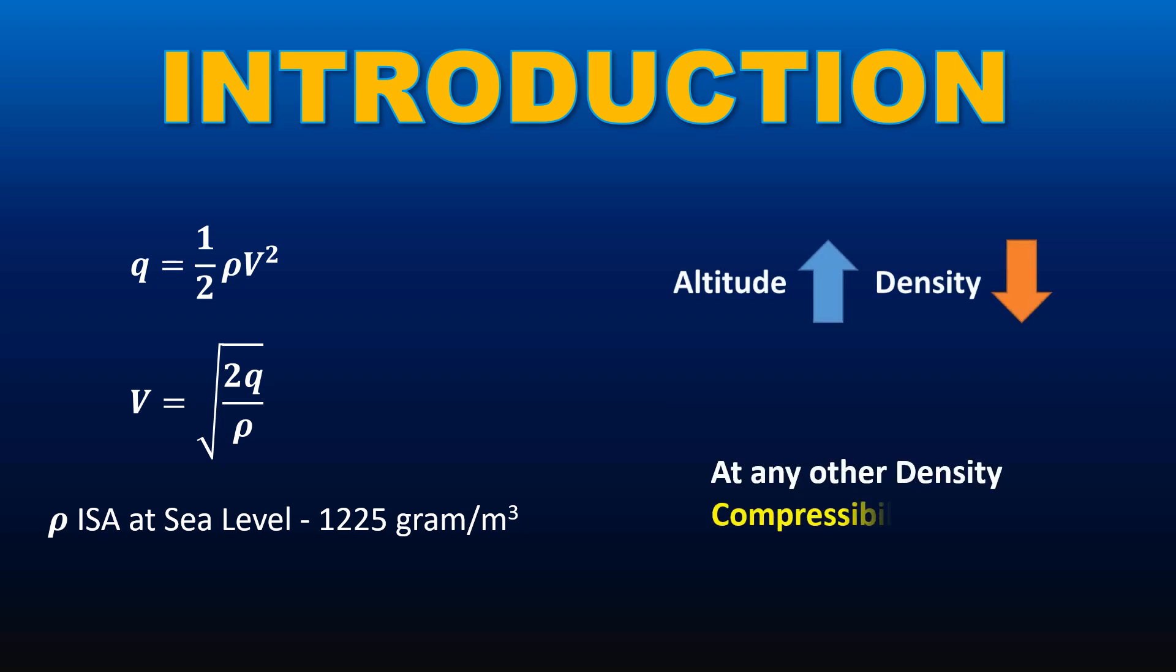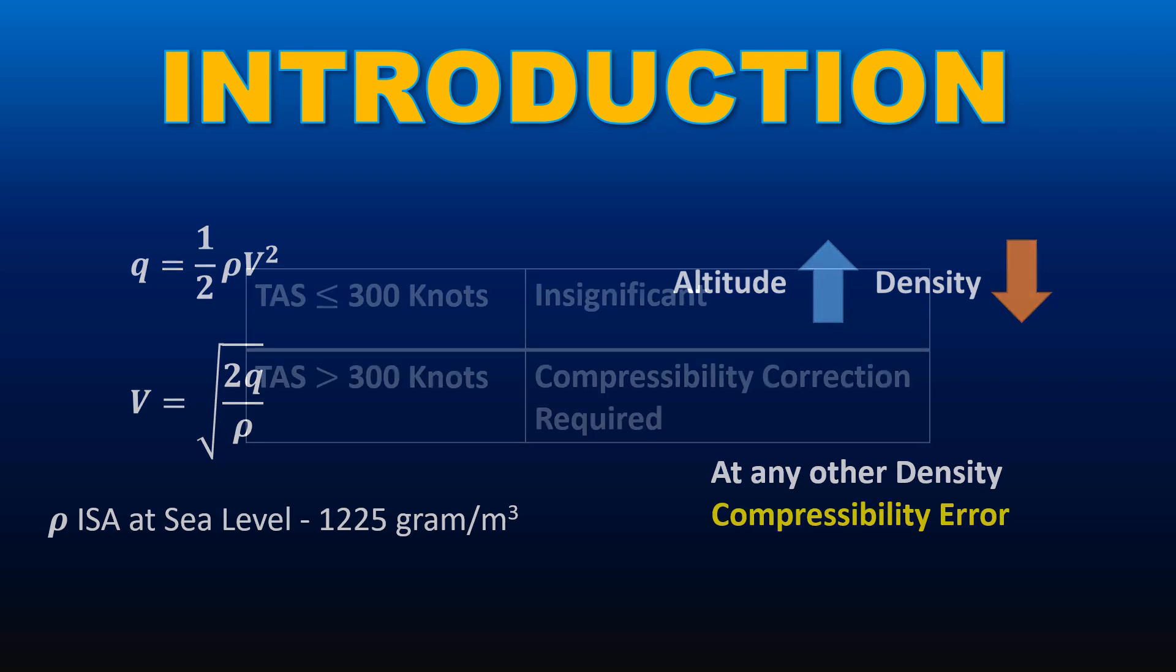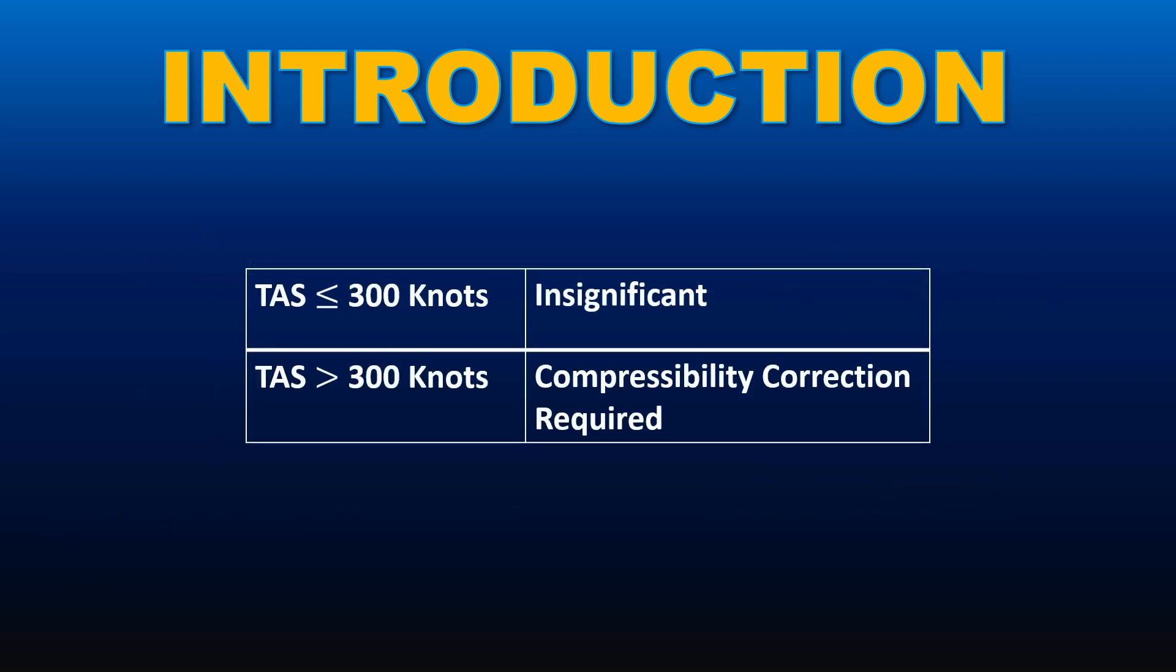At any other density other than ISO density at sea level, compressibility effects start to occur. However, compressibility is not prominent for true airspeed below 300 knots. However, compressibility correction needs to be applied for true airspeed above 300 knots.